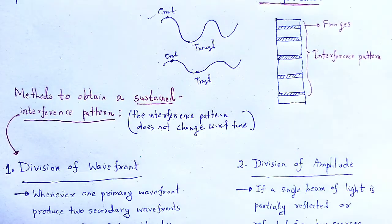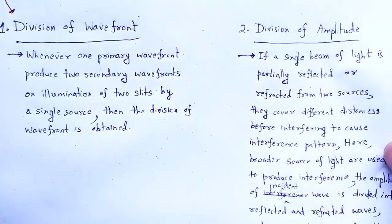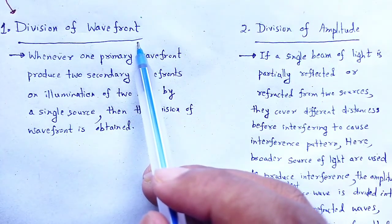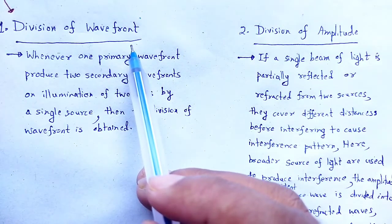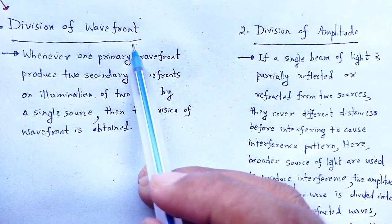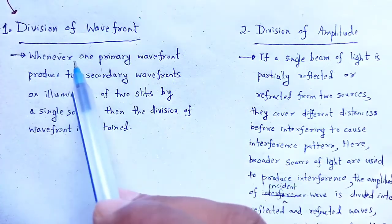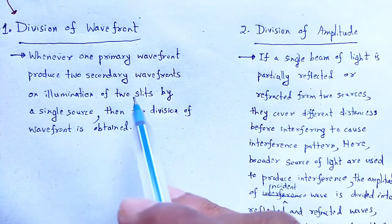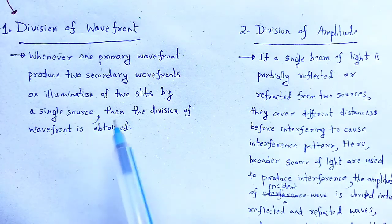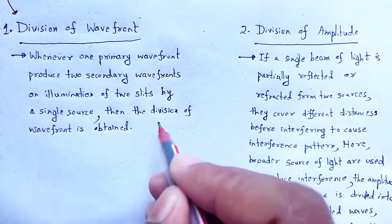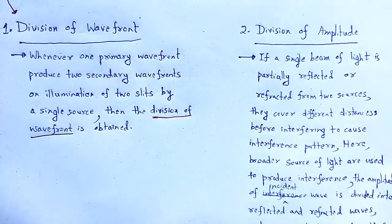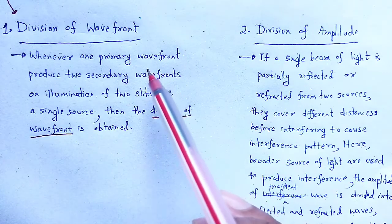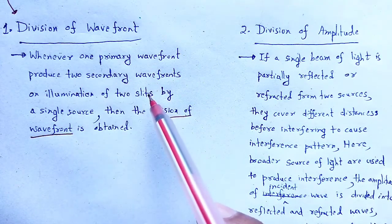What is division of wavefront? The name indicates the wavefront is divided. Using Huygens' principle, the concept of wavefront is applied here. Whenever one primary wavefront produces two secondary wavefronts on illumination of two slits by a single source, then division of wavefront is obtained — when one primary wavefront is divided into two secondary wavefronts by using two slits.